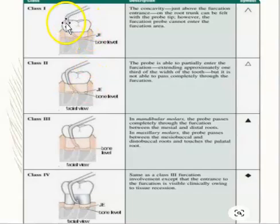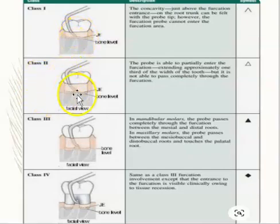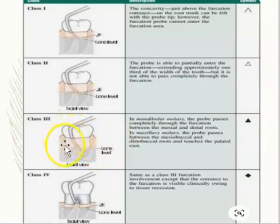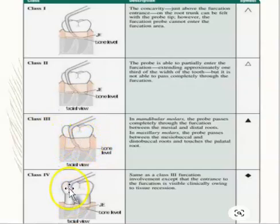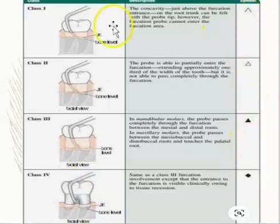Class one is when you can just feel the furcation with the probe but can't really go halfway. Class two is when you can go halfway but it doesn't come out the other side. Class three is when the probe passes through completely but the furcation is covered by gums. Class four involves recession — you can totally see the furcation completely. Remember the symbols for these classifications.